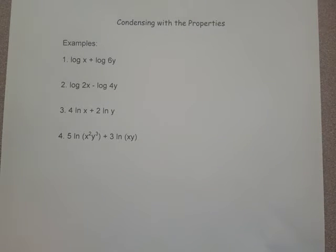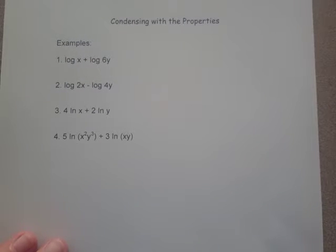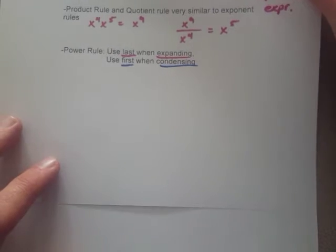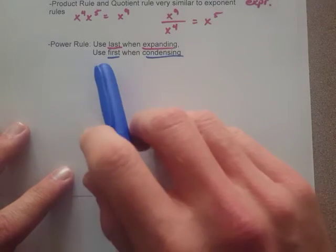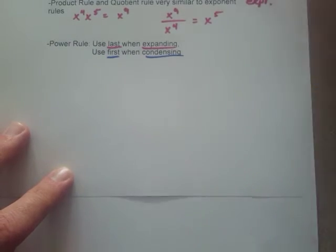This is again 3.4 day one and we're now going to look at some condensing of the log properties. One thing to keep in mind about condensing, as we saw in the first example, is that we're going to use the power rule first when condensing.